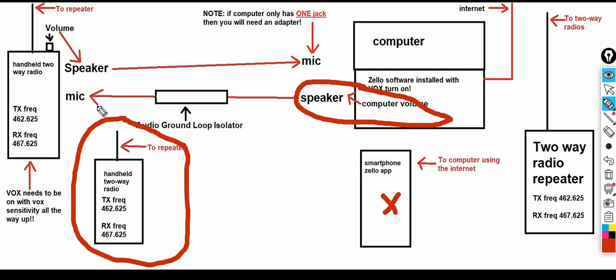Remember, the radio is what gets transmitted — in this case to the repeater, then out to the other handheld in the field. When someone says it sounds distorted, you need to figure out whether it's someone talking on Zello coming through the radio, or someone on the handheld talking into Zello. Determine which direction it is, then adjust the volume accordingly.